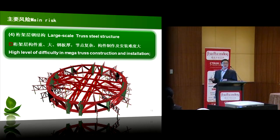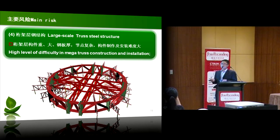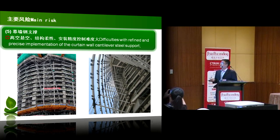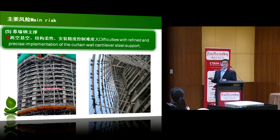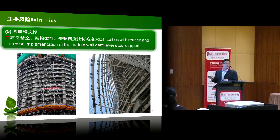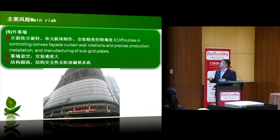The fourth largest risk comes from the large-scale truss steel structure, where the main risk is construction and installation difficulty — achieving high accuracy in mega truss installation is key. The fifth risk is the curtain wall steel support system, which has a hanging structure and is a relatively light structure that may experience deformation. The biggest risk here is the precise implementation of the curtain wall cantilever steel components.